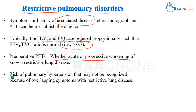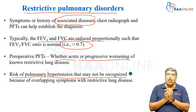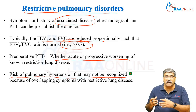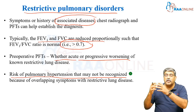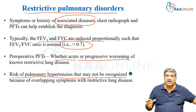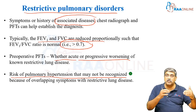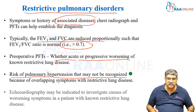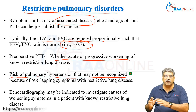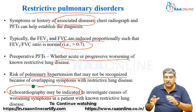There might be a risk of pulmonary hypertension which may not be recognized because of overlapping symptoms with restrictive lung disease. For example, the patient might be dyspneic or hypoxic due to restrictive lung disease, and we attribute it to that. But the patient might also have pulmonary hypertension developing with chronic lung disease, so you might tend to miss it. Whenever there is worsening of symptoms with restrictive lung disease, an echocardiogram is always indicated to assess right heart function.